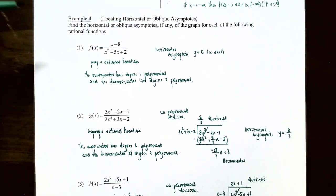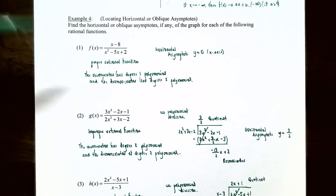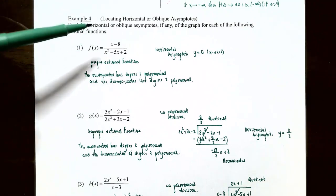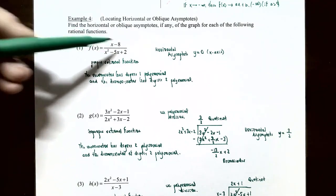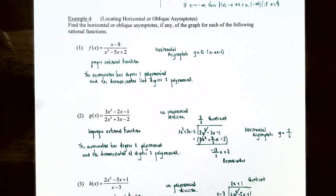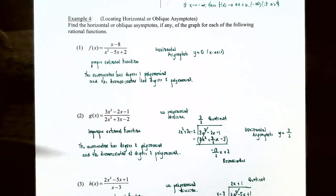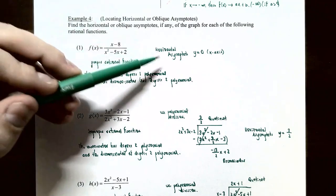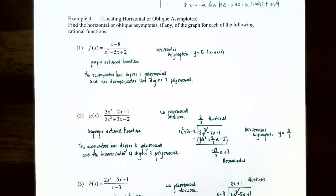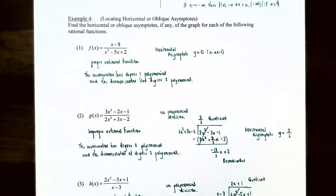In Example 4, we locate horizontal or oblique asymptotes. Number one: f(x) equals (x minus 8) divided by (x squared minus 5x plus 2). The degree of the numerator is 1 and the degree of the denominator is 2. Since the numerator has smaller degree than the denominator, this is a proper rational function, and the horizontal asymptote is automatically y equals 0, the x-axis. As x approaches positive or negative infinity, the y values approach 0.